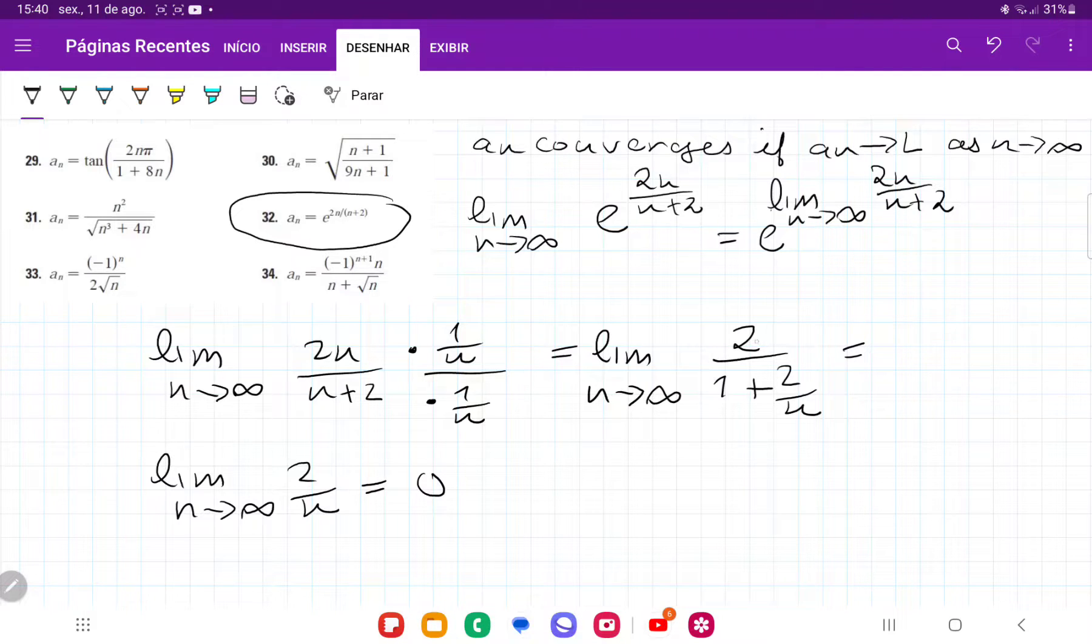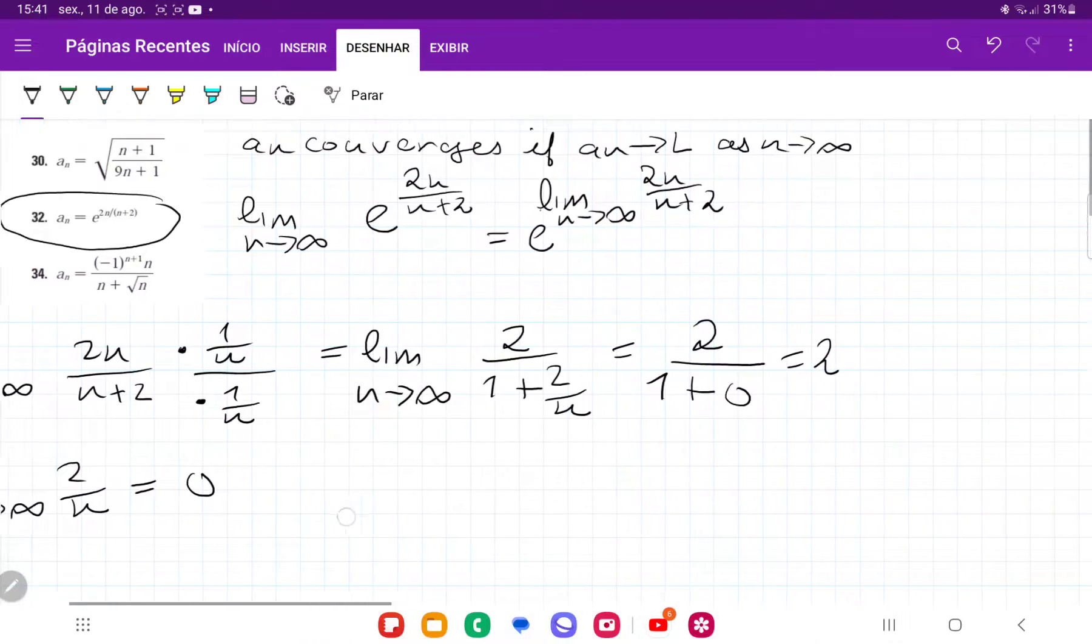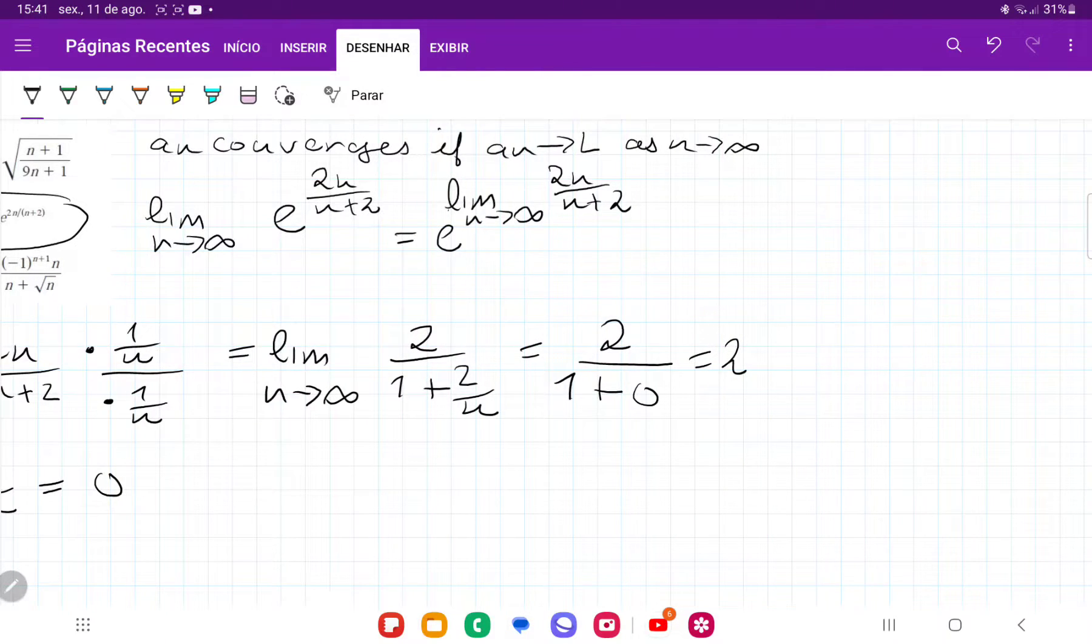So this limit is going to be, the limit of 2 is just 2 over 1, that doesn't change, plus this limit over here, 2 over n, that goes to 0, and therefore this is 2. So if the limit of that expression tends to 2, this is going to be equal to e to the power of 2.